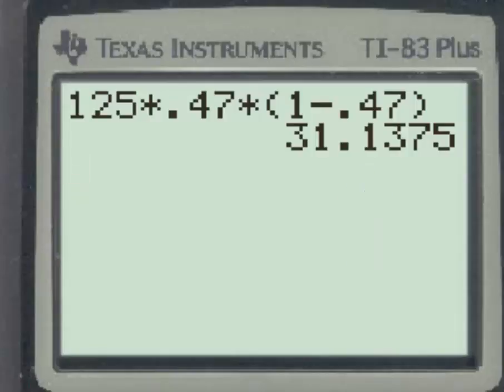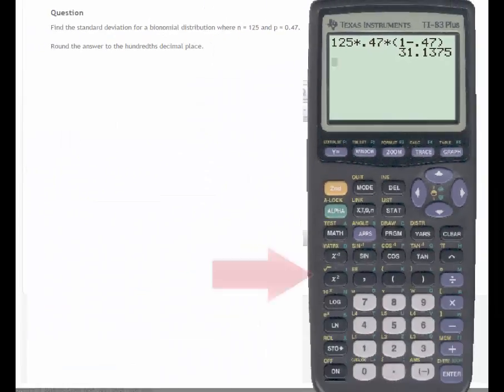To find the standard deviation, we'll take the square root of this number. On the TI-83, the square root is over the x squared button, so we'll go to the yellow second key and then to the square root. I could type in 31.1375,